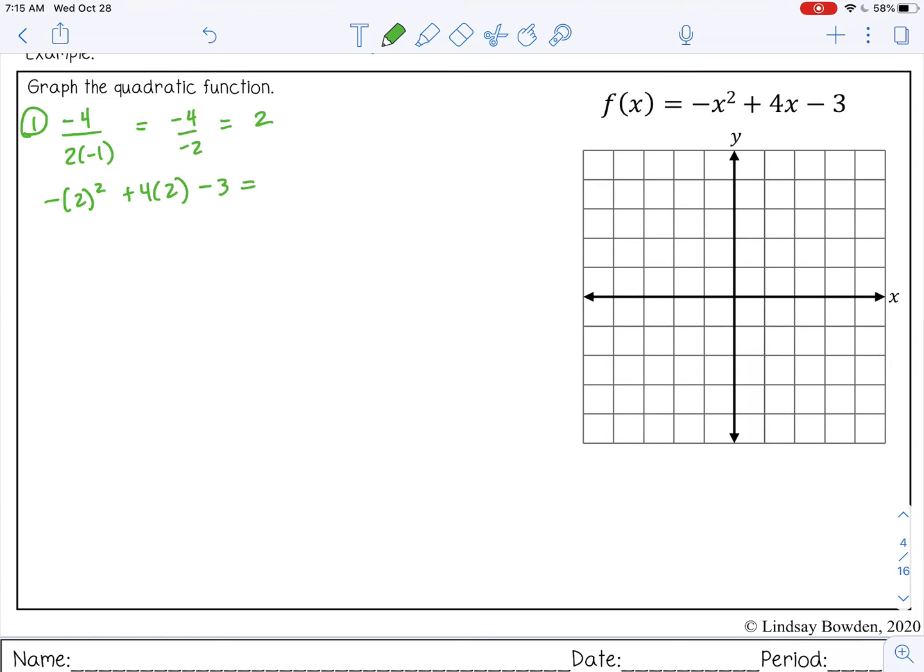And then substitute 2 in for x to find the rest of the vertex. So that's negative 4 plus 8 minus 3. So that's 4 minus 3. That's 1. So my vertex is 2, 1. And my axis of symmetry is 2.